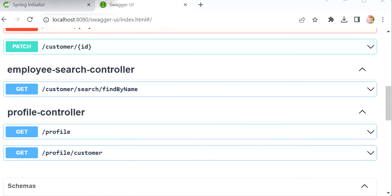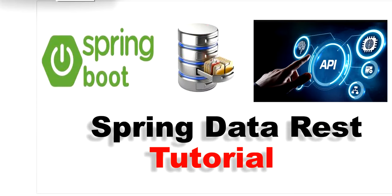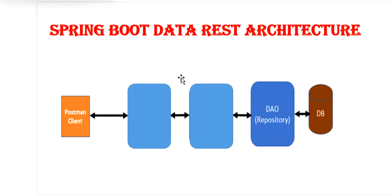In this video we have explored the revolutionary simplicity offered by Spring Data REST for creating RESTful APIs, by eliminating the need for traditional controller and service layers. Spring Data REST automates the API creation process, allowing developers to focus only on business logic rather than boilerplate code. We don't need any controller or service layer — we can directly communicate with our DAO layer and create the REST endpoints. Thanks for watching this video, see you next time.